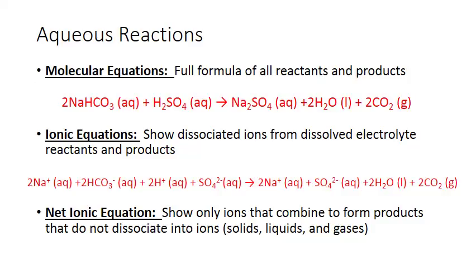In the full ionic equation, there are a few ions that are present in the same form on both sides of the arrow. For example, sodium: we have two sodium ions on the left and two sodium ions on the right. We also have one sulfate ion on the left and one sulfate ion on the right. Because they are present in the exact same form on both sides, it indicates that they never really came together to form a new compound — they remained dissociated ions throughout. We say these are spectator ions; they didn't take part in the heart of the reaction. In a net ionic equation, we eliminate those spectator ions and focus only on the ions that actually formed a new substance — a pure solid, liquid, or gas.